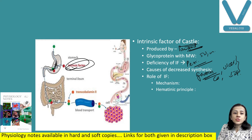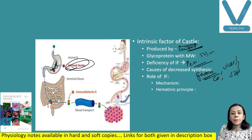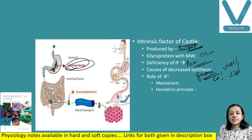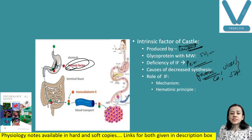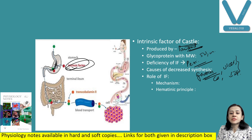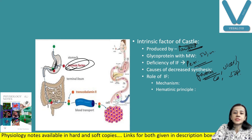The intrinsic factor–vitamin B12 complex reaches the ileum, where vitamin B12 is absorbed into the portal blood after splitting off from intrinsic factor. Intrinsic factor then returns to the stomach for further action. Together, the extrinsic and intrinsic factors are known as the hematinic principle, which helps in the maturation of RBCs.